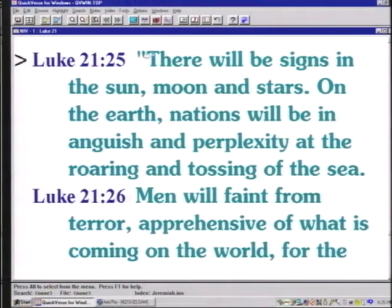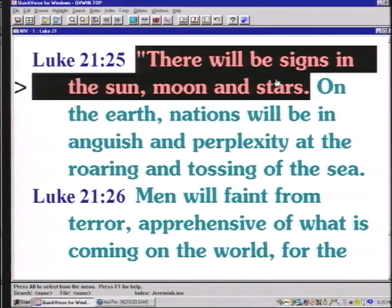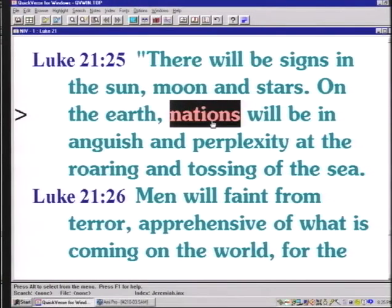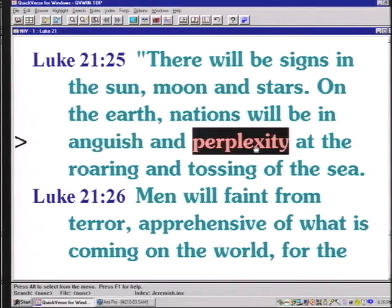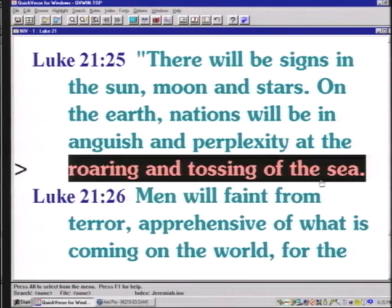Let me show you a text that I think is very important with respect to this. Luke chapter 21 verse 25, Jesus said, there will be signs in the sun, moon, and stars on earth. Nations will be in anguish and perplexity at the roaring and tossing of the sea. What causes this roaring and tossing of the sea that perplexes all the nations? I think it's the asteroid impact. Nothing else sinks a third of the ships. The Bible says that this will sink a third of the ships and all the sea creatures die.